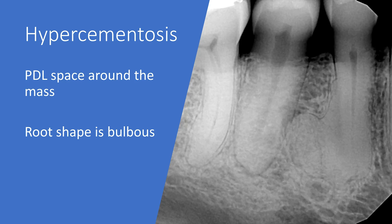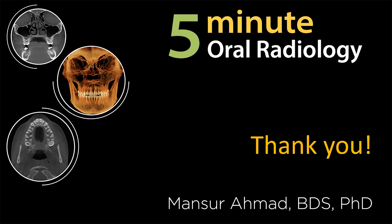Hypercementosis is easy to identify. The tooth is vital, the radiopacity is homogeneous, there is a well-defined PDL space around the mass, and the root shape may become bulbous. Thank you very much. Come back again for another video.